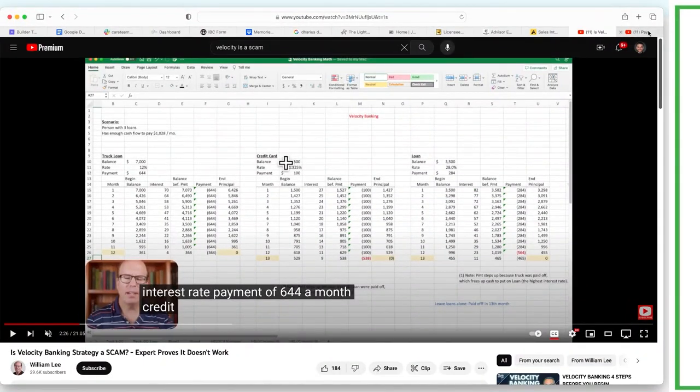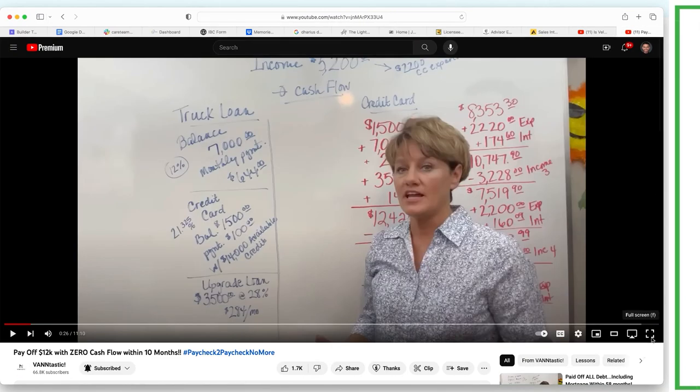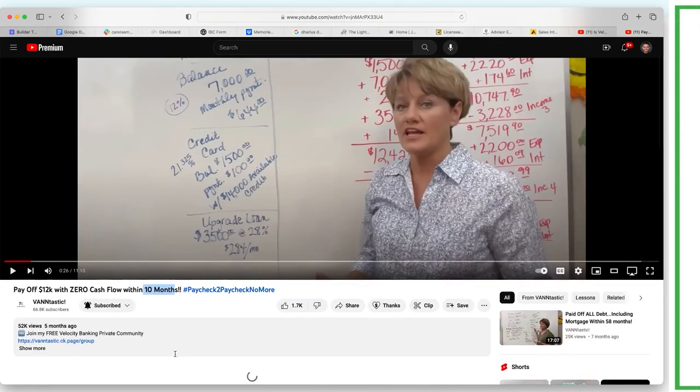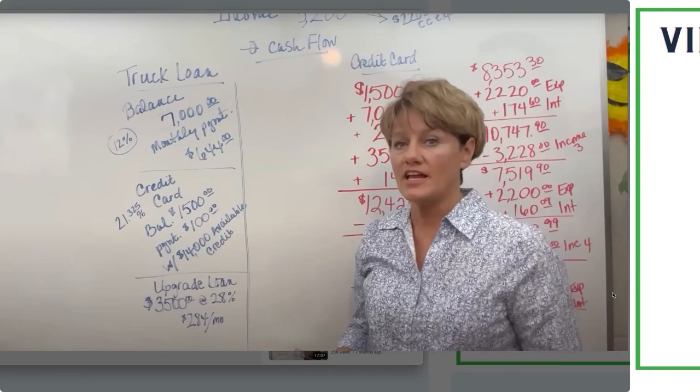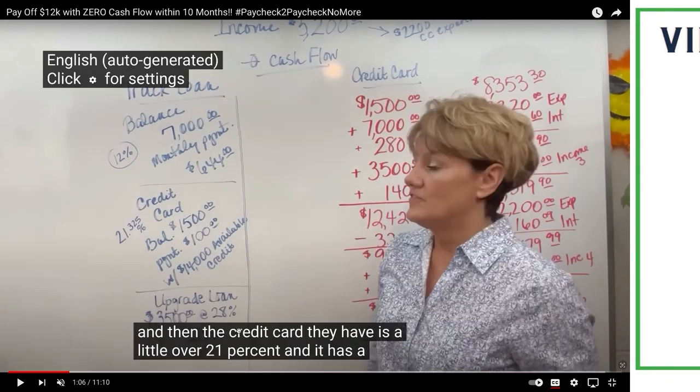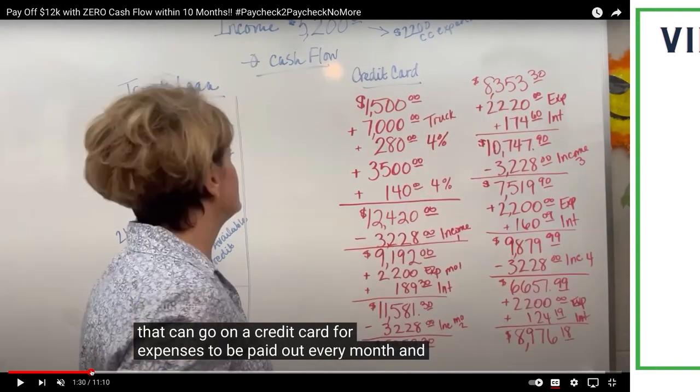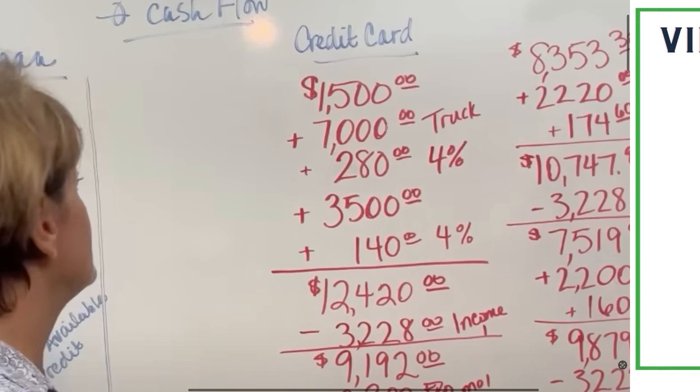Okay. So the reason why he calls Velocity Banking a scam is because Miss Christy Van here, according to her video, says that to pay off $12,000 with zero cash flow within 10 months. Is that not an attractive title to click on? That's why it got 52,000 views, and that was five months ago. So in 10 months, she is claiming that somebody with zero cash flow can pay off $12,000 in debt. So what she establishes here, let me see if she moves to that side. Okay, perfect. So she is showing the credit card balance, $1,500. The truck, $7,000.